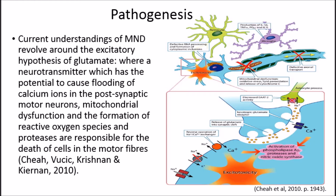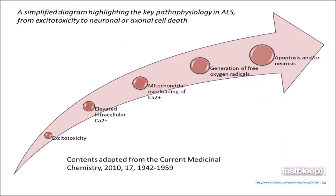Current understandings of MND revolve around the excitatory hypothesis of glutamate, where a neurotransmitter which has the potential to cause flooding of calcium ions in the postsynaptic motor neurons, mitochondrial dysfunction and the formation of reactive oxygen species and proteases are responsible for the death of cells in the motor fibres. Here is a simplified picture of the pathophysiology in MND that shows the process from excitotoxicity through to neural or axonal cell death.